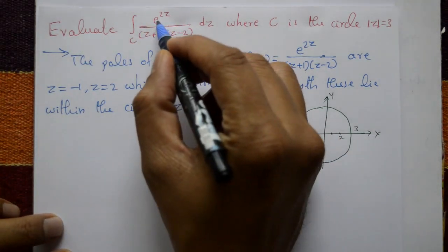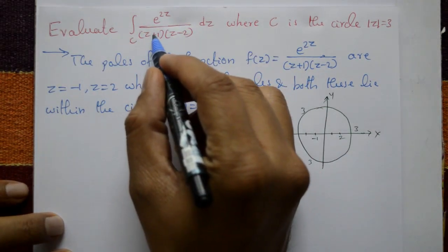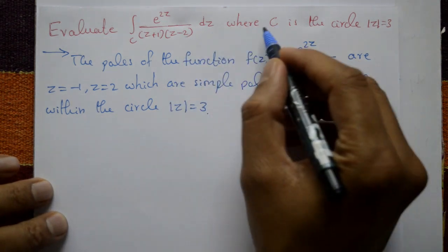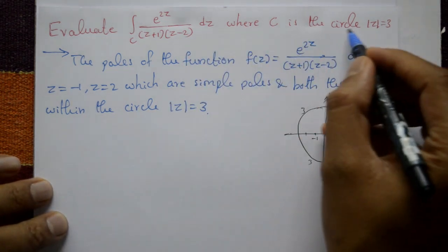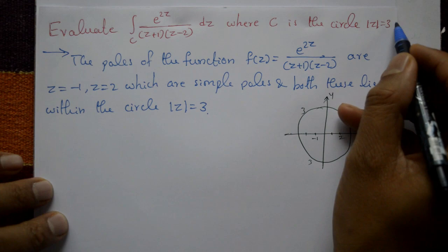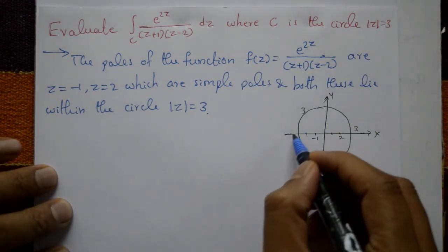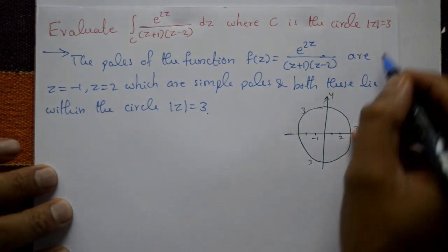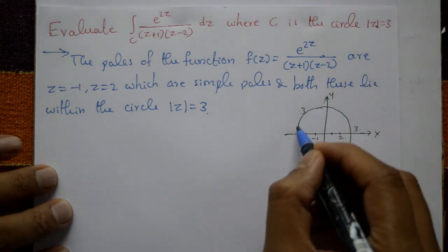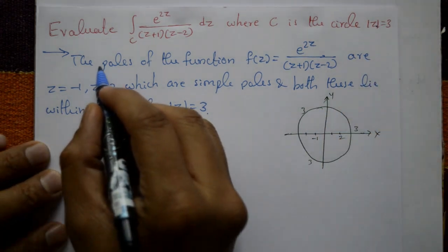Evaluate the integration of e^(2z) / [(z+1)(z-2)] dz, where C is the circle |z| = 3. This is the radius of the circle on the x and y axis, where |z| = r, and the radius r is 3.